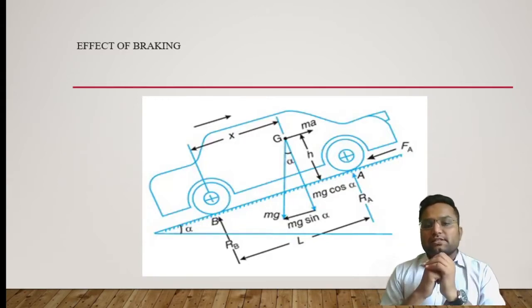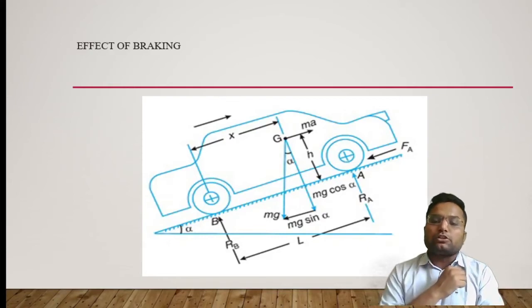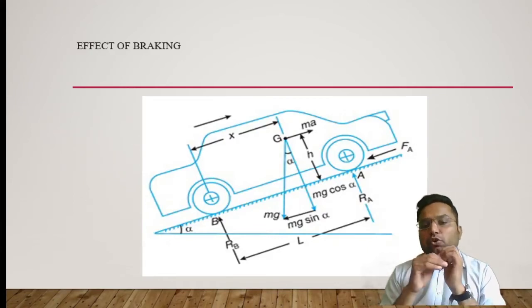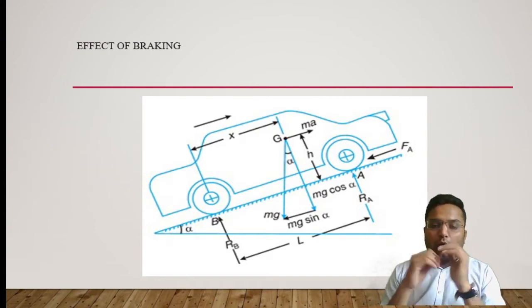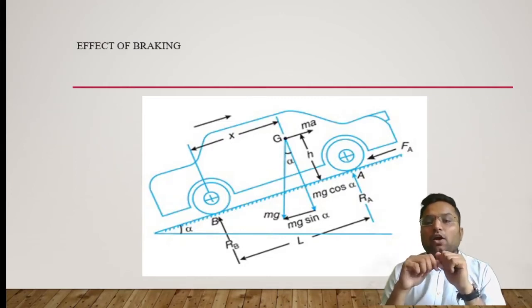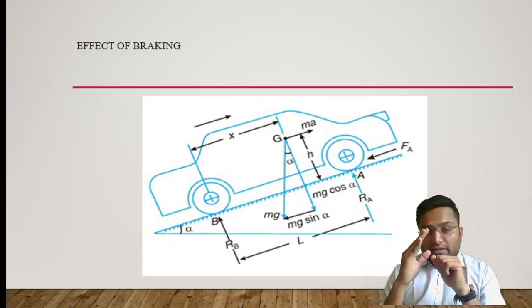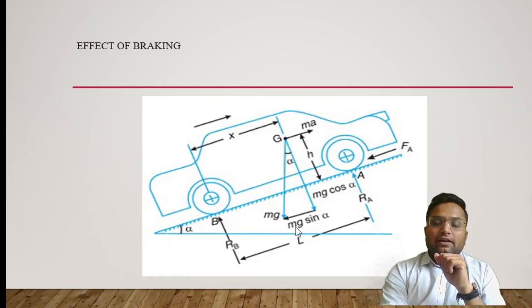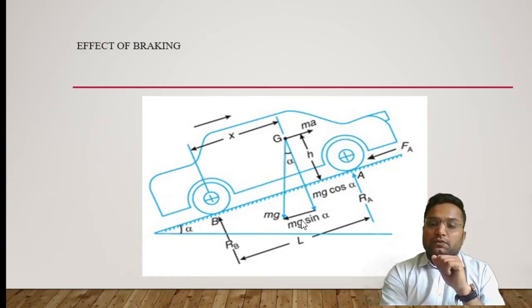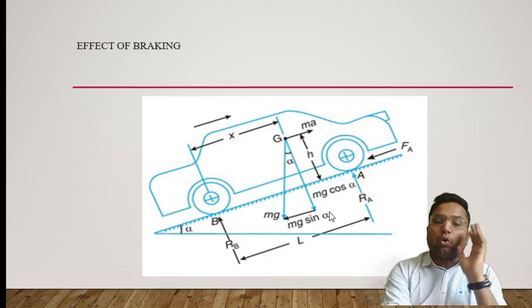Let's consider the generalized case where a vehicle is ascending a slope at an angle alpha. The weight of the vehicle acts through the center of gravity — which is CG — and makes angle alpha with the vehicle's central axis. This weight has two components: the vertical component is mg cos alpha, and the horizontal component is mg sin alpha.